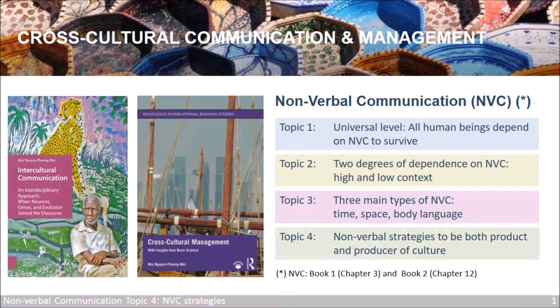In Topic 1, we learned that universally, everyone needs nonverbal communication. Topic 2 tells us that, although we are the same in needing nonverbal communication, we are different in level — high and low context. Topic 3 focuses on three main types of nonverbal communication: time, space, and body language. The last topic will provide some strategies of how to use nonverbal communication effectively to be both the product and a producer of a culture.